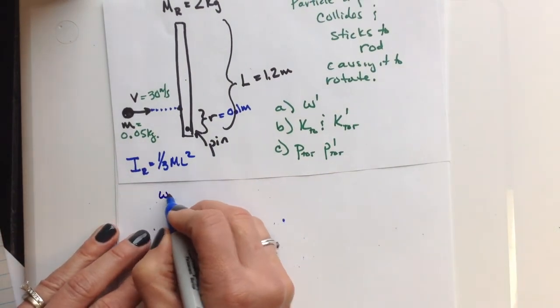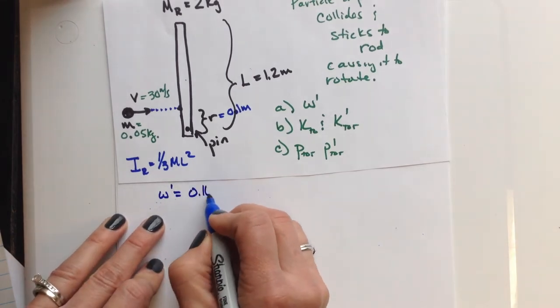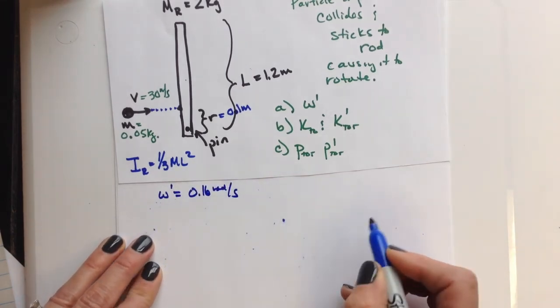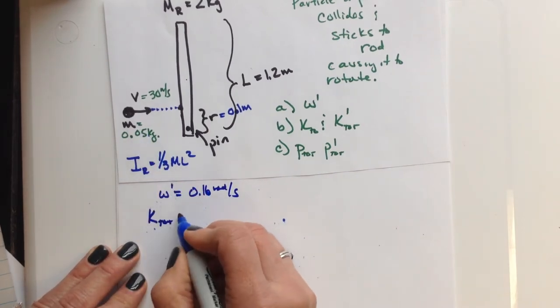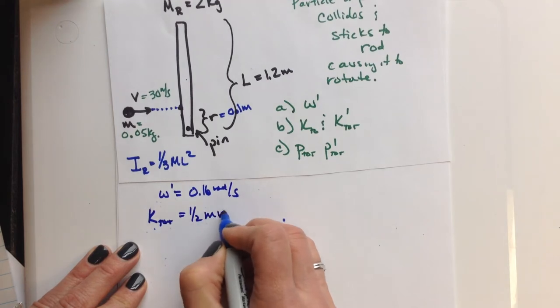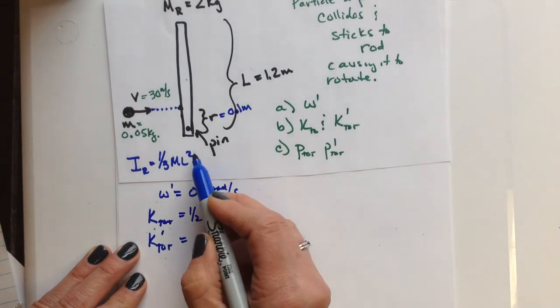So kinetic energies, it's going to be useful to remember what we just solved for our angular velocity to be, which is 0.16 radians per second. So before, our total kinetic energy is just going to be the particle that's moving, so 1 half mv squared. And then afterwards, our total kinetic energy, since it's not translating, it's just rotating, we can use our rotational kinetic energy to be our final total kinetic energy.